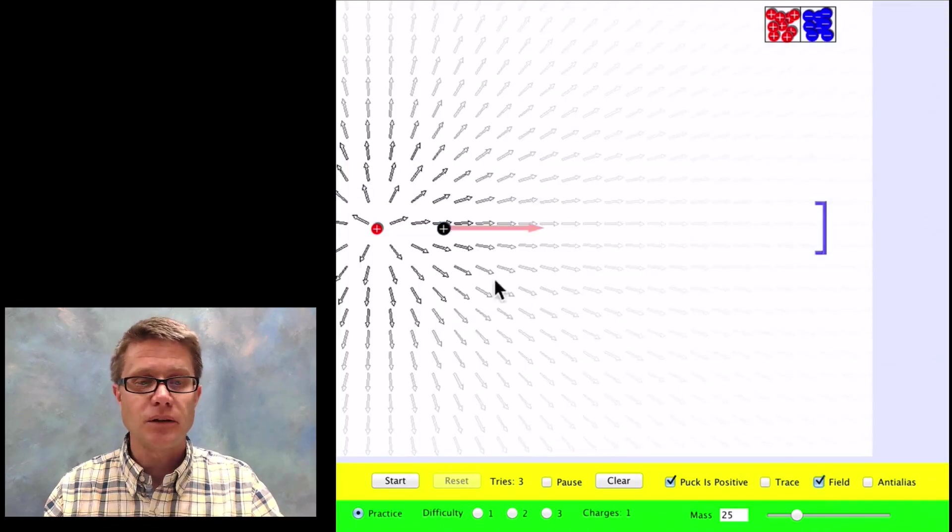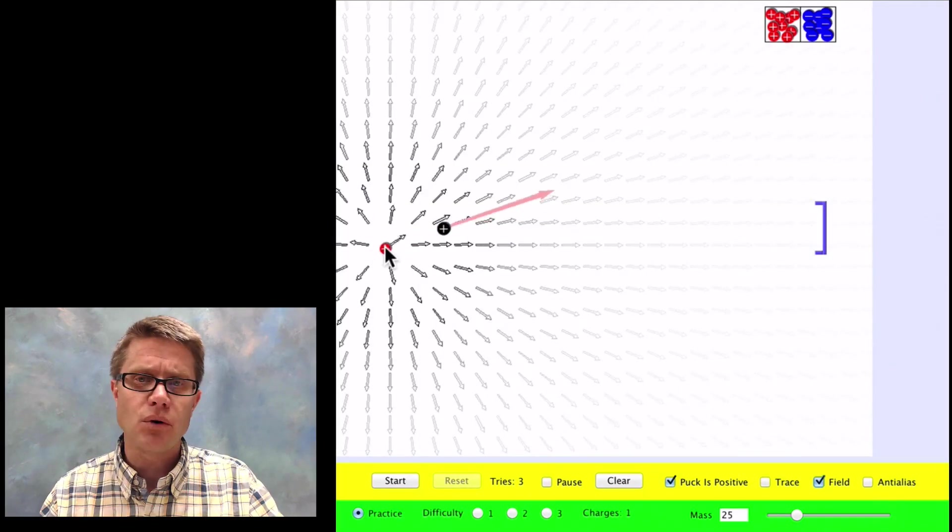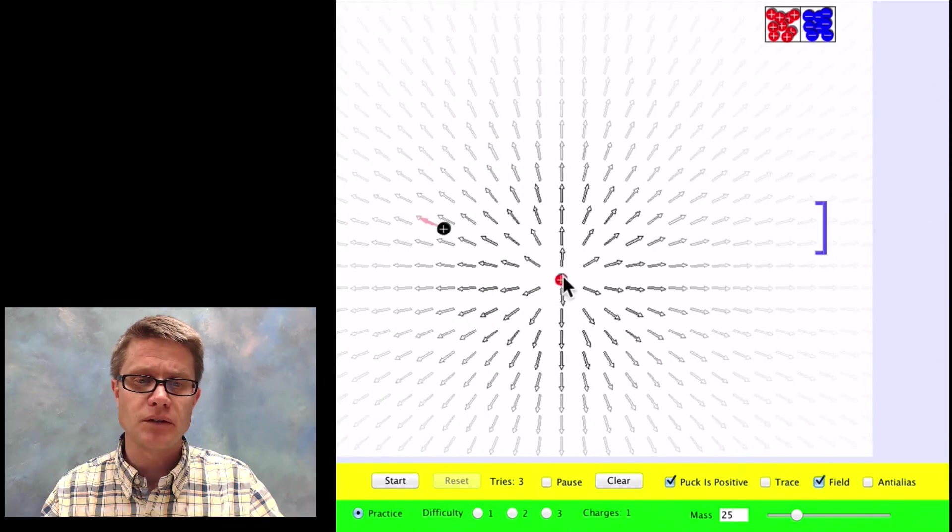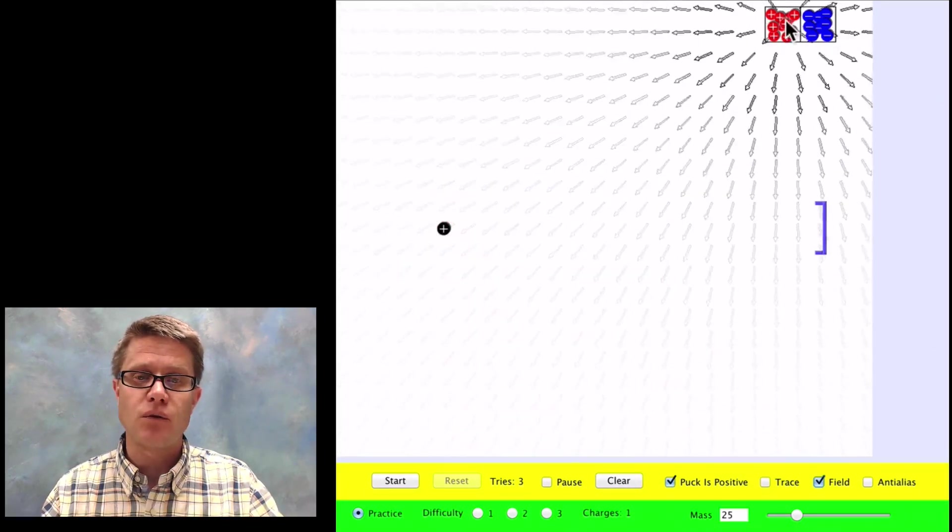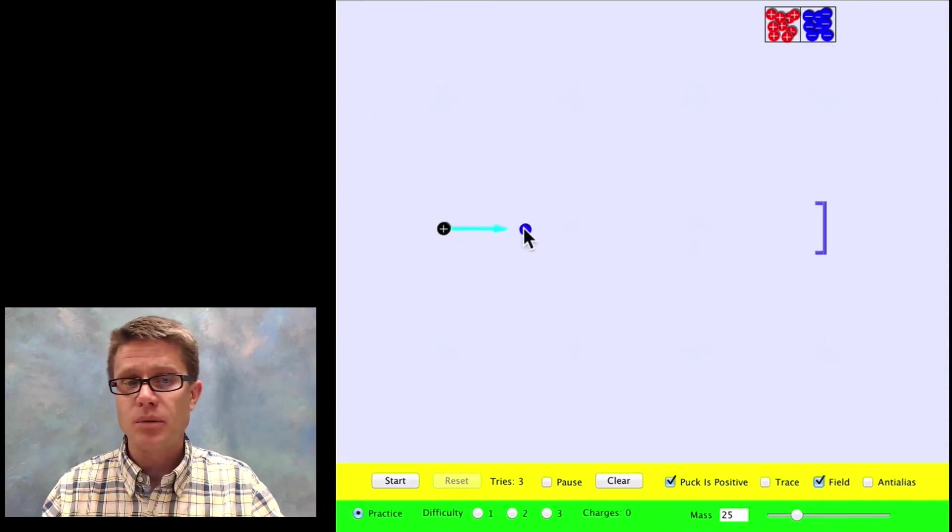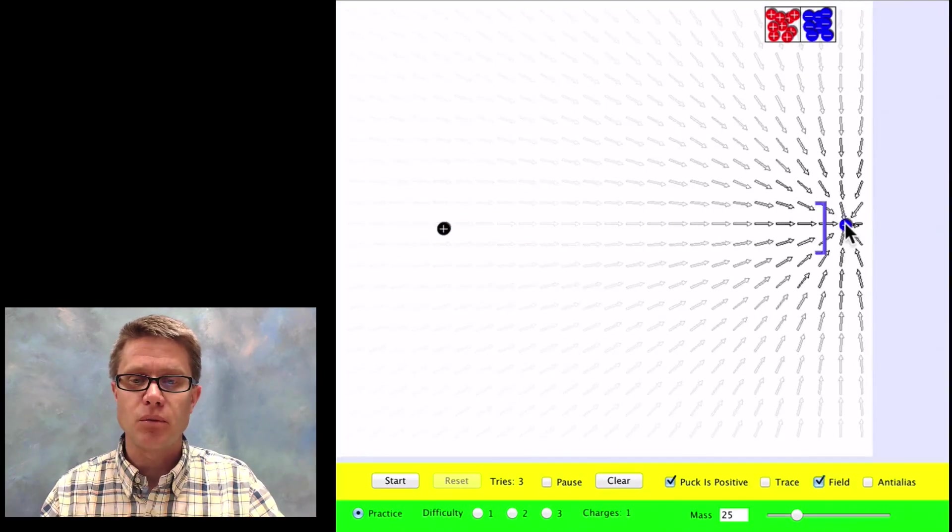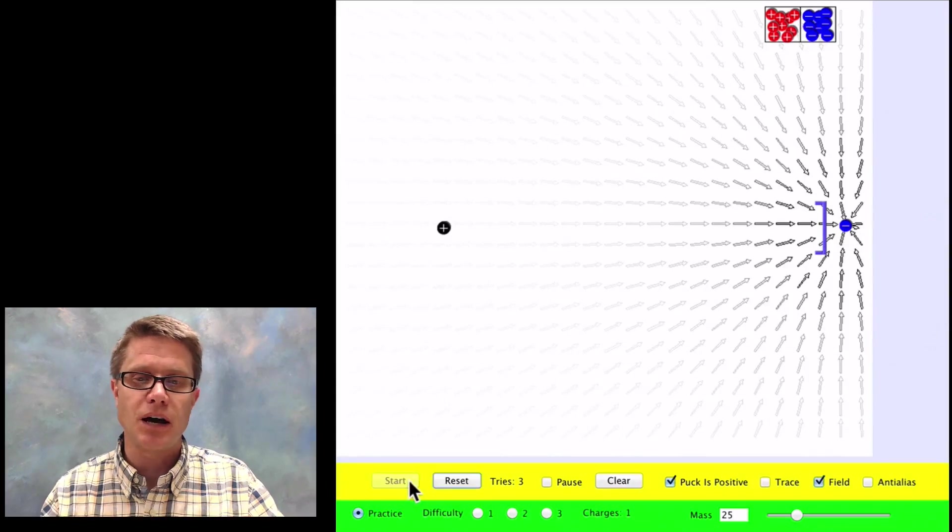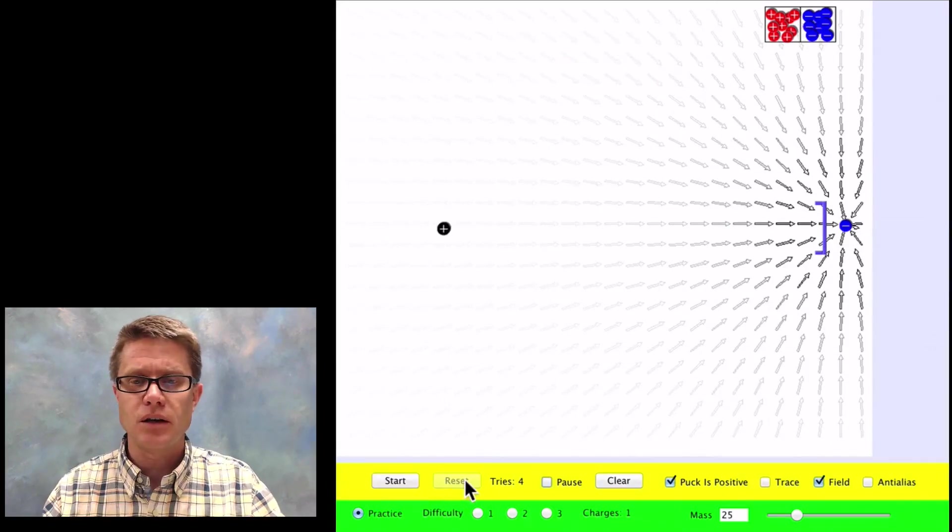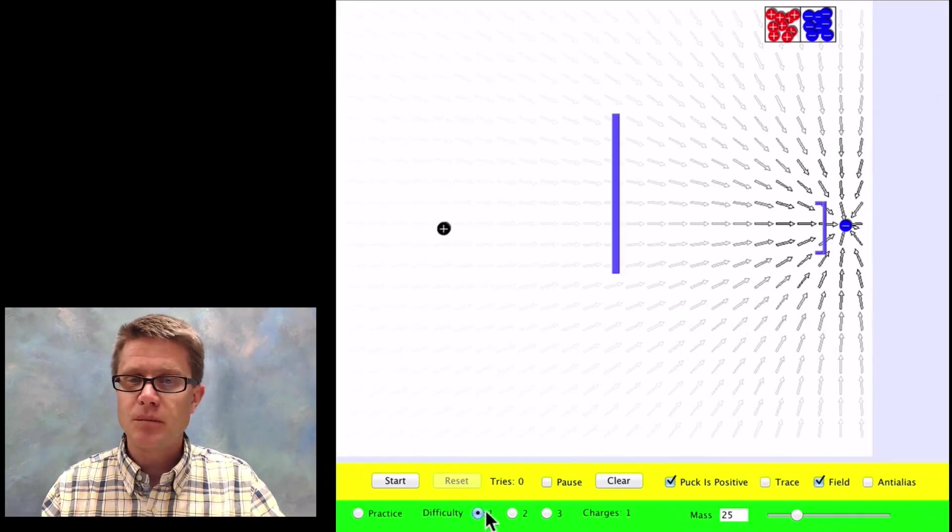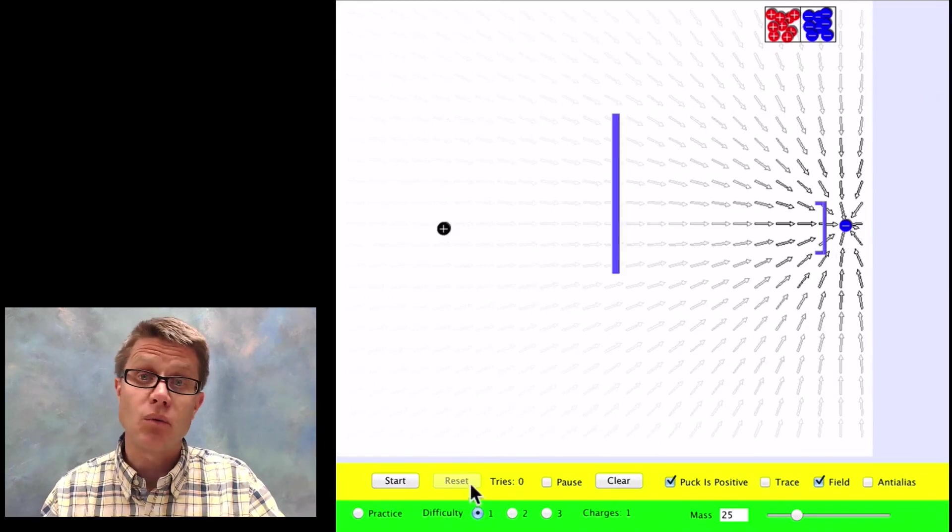Now let's map the field. As I move this source we start to see the vector fields. The brighter the arrows are in this case, the bigger that force is. We could now grab an opposite charge. Now the arrows are pointing towards it. I could position it behind the goal. It's slow now, but as the force gets greater we get more acceleration.